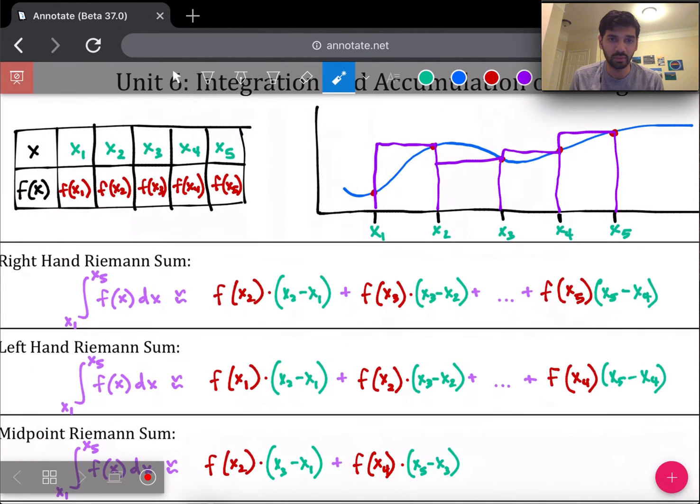And so if I go throughout this graph and use the right endpoint of each interval, that means I'm using x2 for the first interval, x3 for the second interval, x4 for the third interval, and x5 for the fourth interval. We have four rectangles here. So we did not use the height of x1. So if you look at this approximation here, we started with f of x2 as the first height times the base of that rectangle, which is x2 minus x1. This is the base times the height.